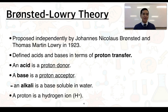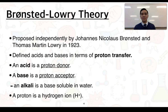The idea of acids and bases has been around for quite some time and scientists have looked at ways to define what makes an acid or a base. Looking at high school chemistry, a theory was proposed independently by two scientists — Johann Nicholas Brønsted and Thomas Martin Lowry — both in 1923. They defined acids and bases in terms of proton transfer: an acid is a proton donor whereas a base is a proton acceptor.